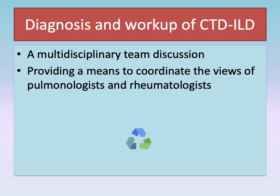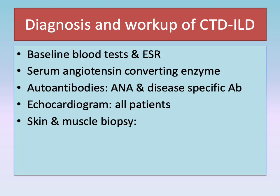Diagnosis of CTD-ILD is primarily based on distinct pathology subtypes, imaging, as well as related CTD and autoantibodies profile. Multidisciplinary team discussion is important in reconciling clinical, laboratory, and imaging data, providing a means to coordinate the views of pulmonologists and rheumatologists in formulating diagnostic and treatment strategies. Diagnostic workup includes baseline blood tests, ESR, CK level, serum ACE (angiotensin converting enzyme) level, autoantibodies including ANA and disease-specific autoantibodies, echocardiogram to rule out pulmonary hypertension and cardiomyopathies, and skin and muscle biopsy in selective patients.